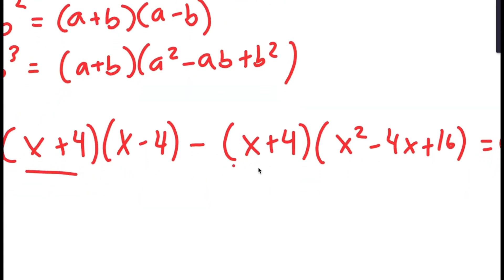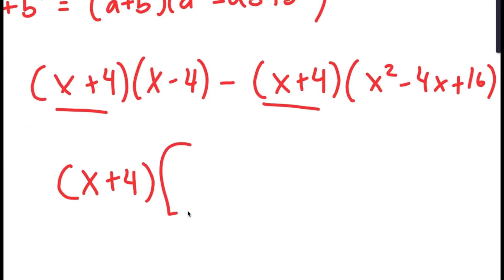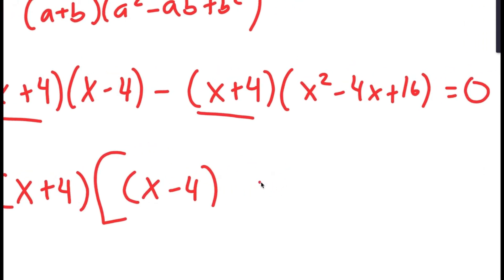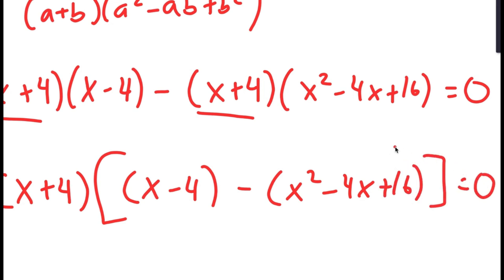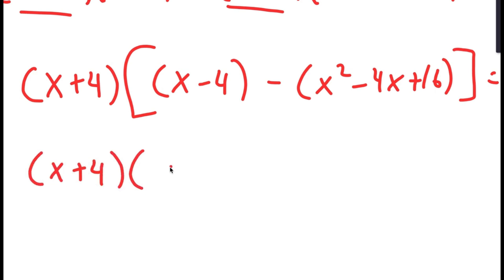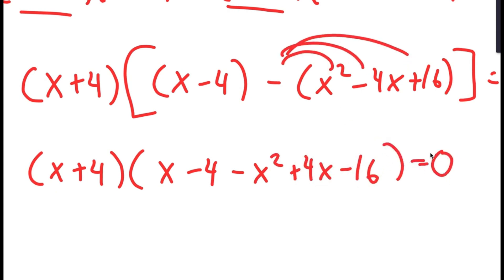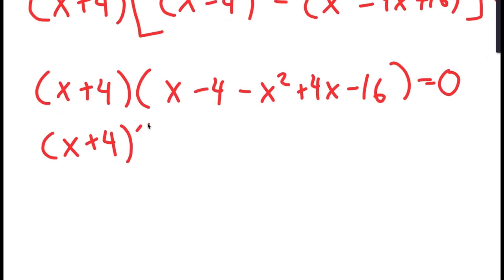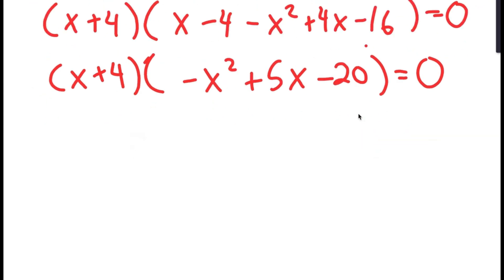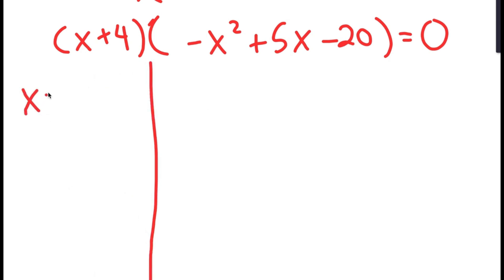Because both of these terms have x plus 4 in them, I can factor out x plus 4. So I get x plus 4 times the quantity x minus 4 minus x squared minus 4x plus 16, equals 0. Distributing the negative sign, this becomes x plus 4 times x minus 4 minus x squared plus 4x minus 16, equals 0. Simplifying further, I get x plus 4 times negative x squared plus 5x minus 20 is equal to 0. So I get two equations from this: x plus 4 equals 0, and negative x squared plus 5x minus 20 equals 0.